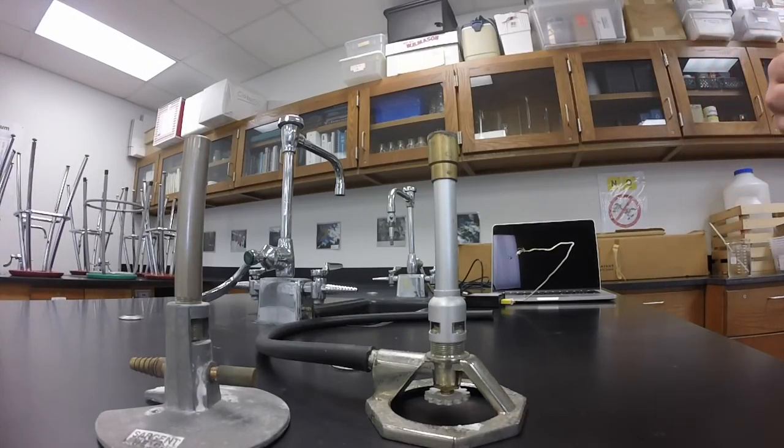The Bunsen burner is a common piece of lab equipment. It's used to generate a flame. It's been used in chemistry labs since the 1850s, and it was invented by Sir Robert Bunsen in 1854.